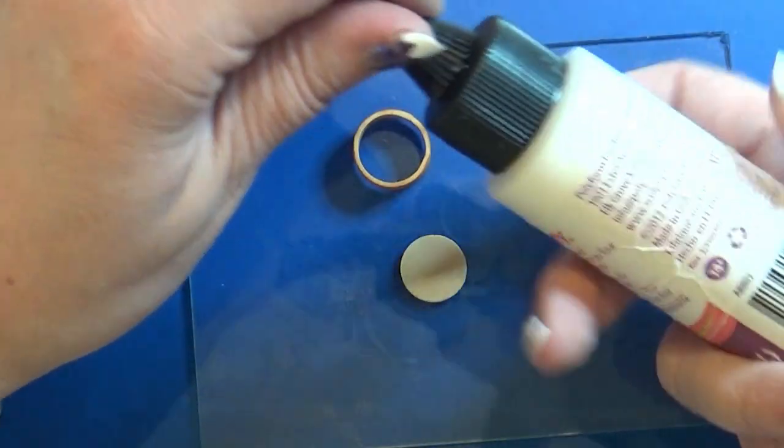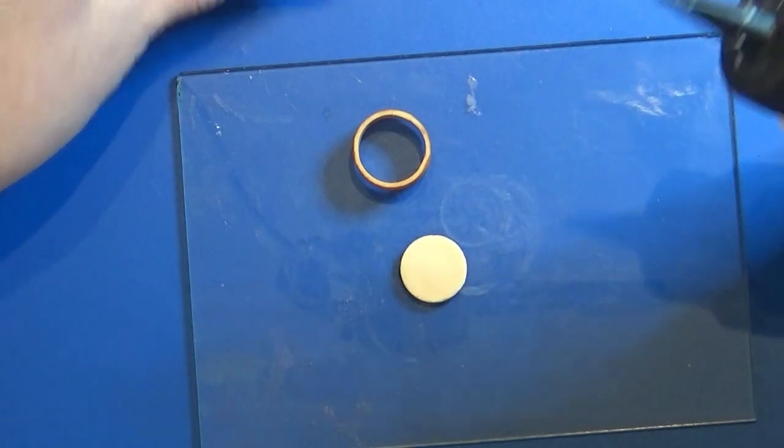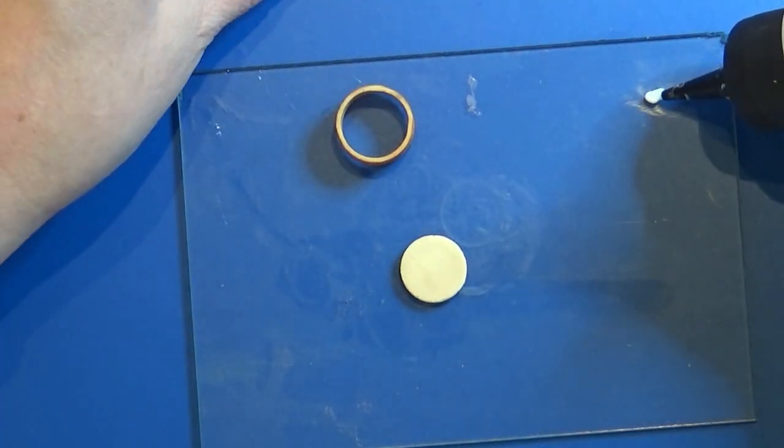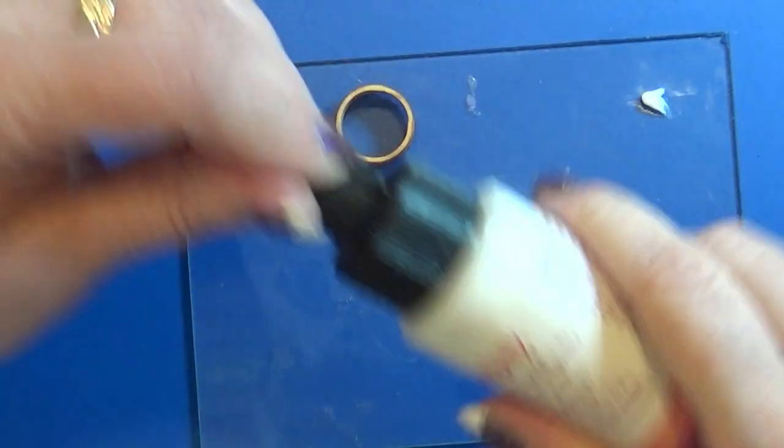I'm using Bake and Bond to keep the two pieces together. This will make it stick better when one piece is unbaked and one is baked.